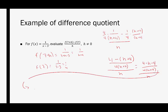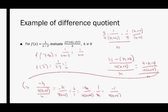That gives us 4 minus h plus 4, over 4 times h plus 4, all divided by h. The numerator becomes 4 minus h minus 4, over 4 times h plus 4, all over h — so the numerator simplifies to negative h. We get negative h over 4 times h plus 4, divided by h. Rewriting this as multiplication by the reciprocal, it becomes negative h over 4 times h plus 4, times 1 over h. The h's cancel, and we end up with negative 1 over 4 times h plus 4 as our final difference quotient.